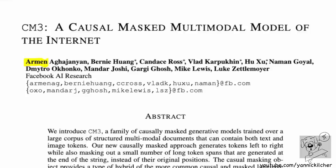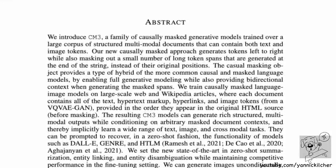CM3 - a causal masked multimodal model of the internet - by researchers at Meta. This model is actually a family of models: a family of causally masked generative models trained over a large corpus of structured multimodal documents that can contain both text and image tokens, in fact much more.